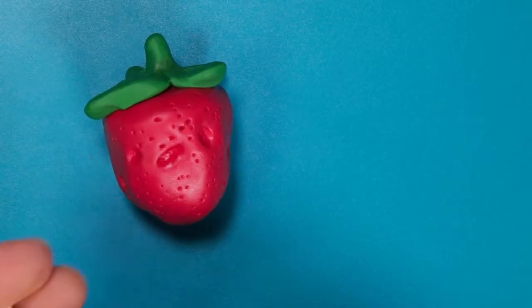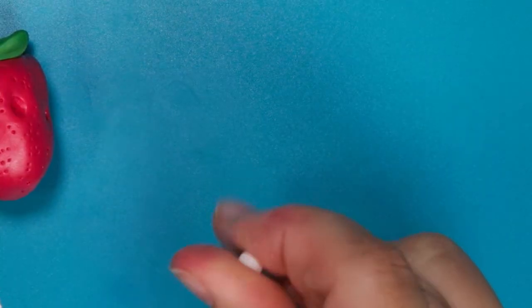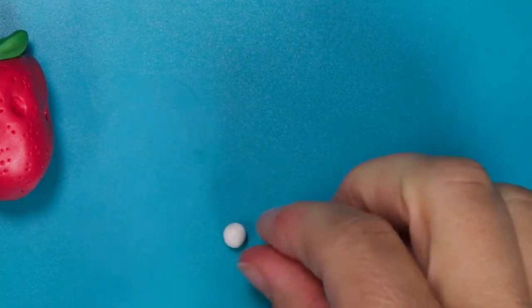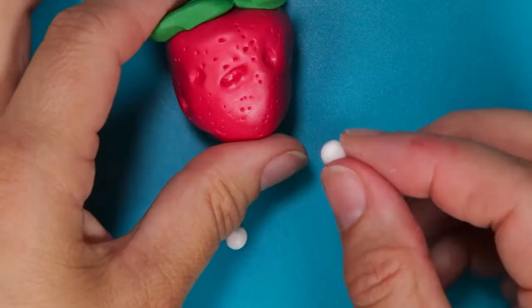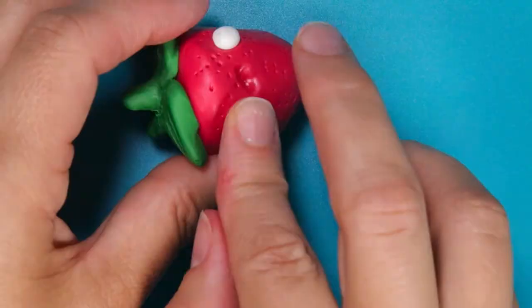Now grab your white clay and pull out enough clay to make two eyes. Roll the clay out into little balls and then place each ball inside your eye socket and flatten them out a little bit with your finger.